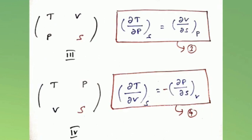Third form: entropy is in the third position here, giving (∂T/∂P) at constant entropy equals (∂V/∂S) at constant pressure — this is the third Maxwell equation. Last equation: (∂T/∂V) at constant entropy equals −(∂P/∂S) at constant volume. Here again we have a minus sign. This is the fourth Maxwell equation.